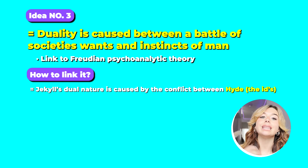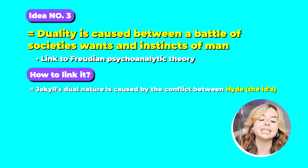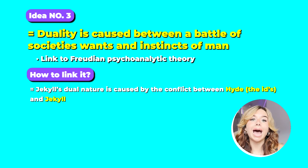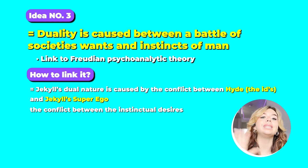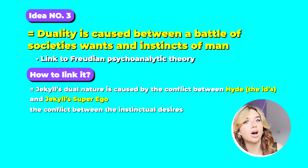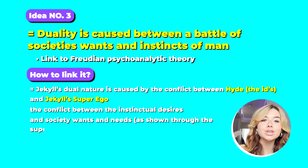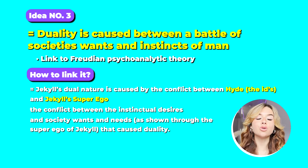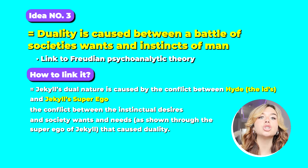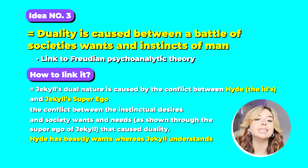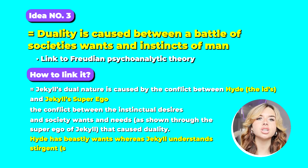We can link this to Jekyll: his dual nature is caused by his conflict between the id — which is Hyde, the animalistic instincts, Hyde being very animalistic in his presentation — and Jekyll's superego. Jekyll conforms to the Victorian standards of propriety, being a proper Victorian gentleman. That conflict between the instinctual desires — the id's desires, which is Hyde — and society's wants and needs, as shown through the superego of Jekyll, causes duality. They're incoherent; they don't work well together. Society's want of being a moral, respectable Victorian gentleman completely conflicts with this animalistic desire to indulge in instincts, so Hyde has these beastly wants whereas Jekyll understands and conforms to these stringent social expectations.